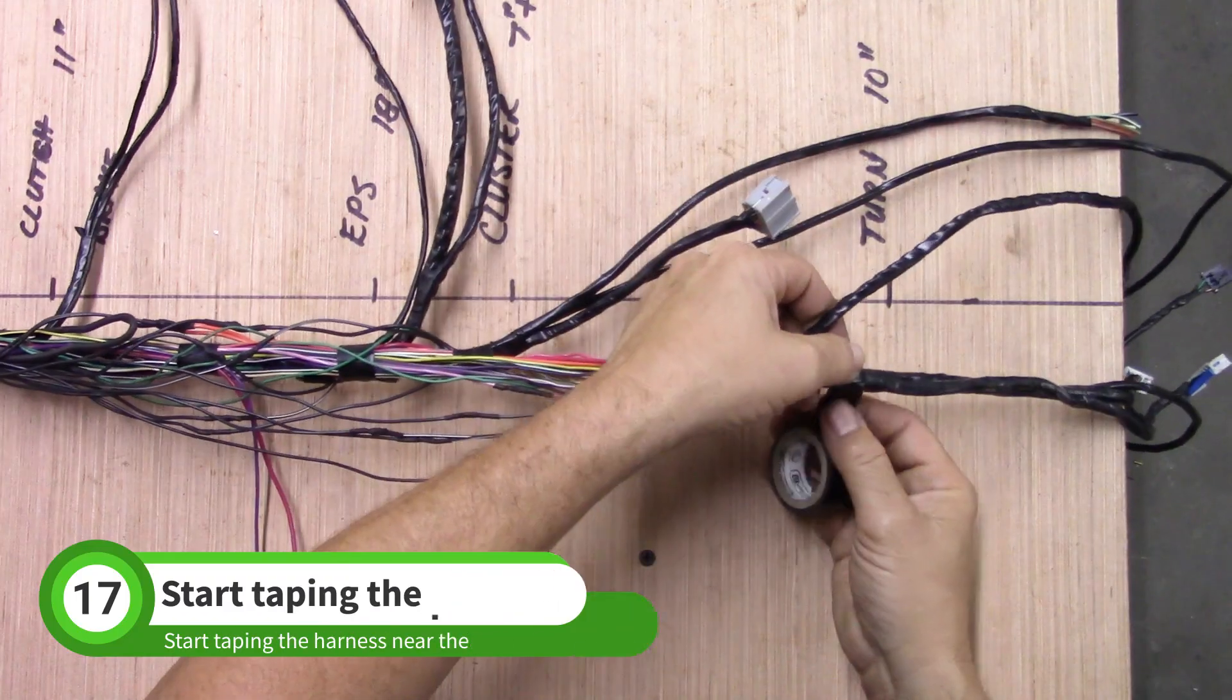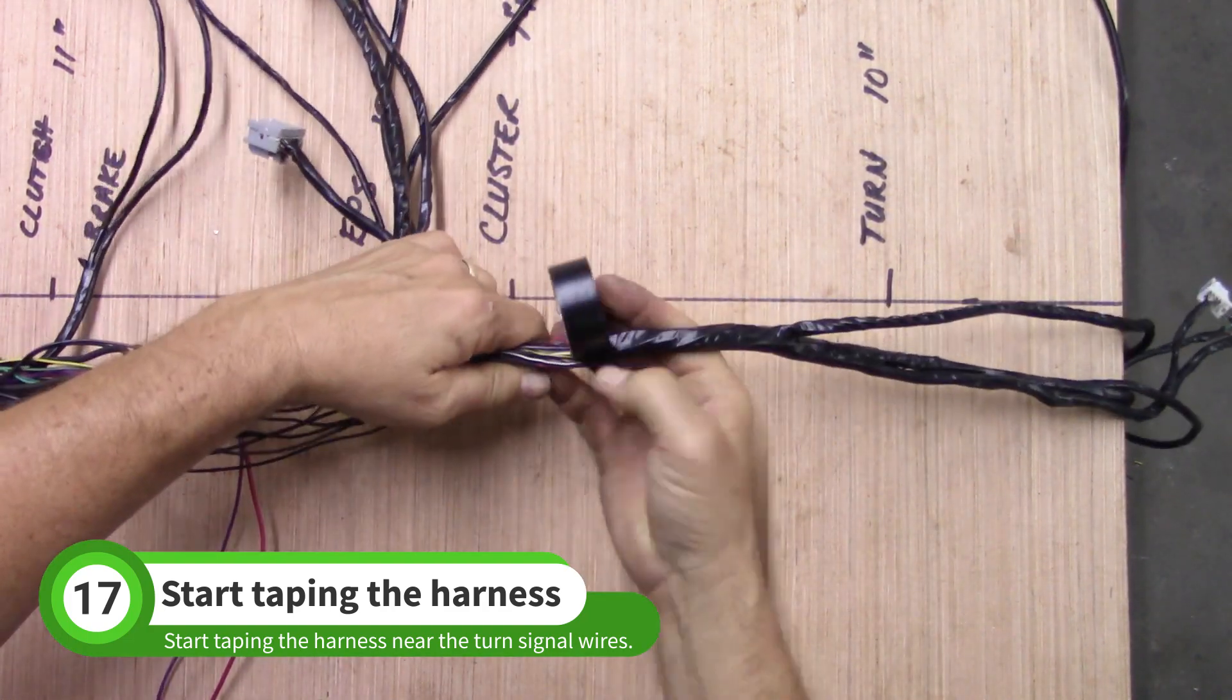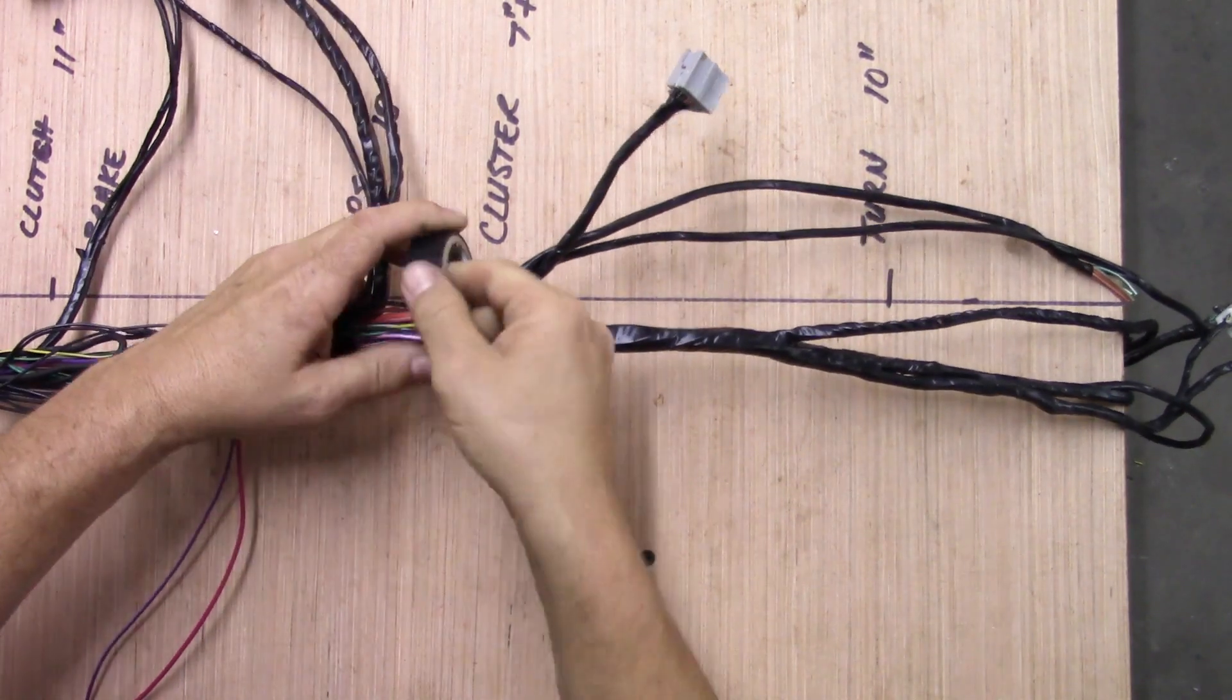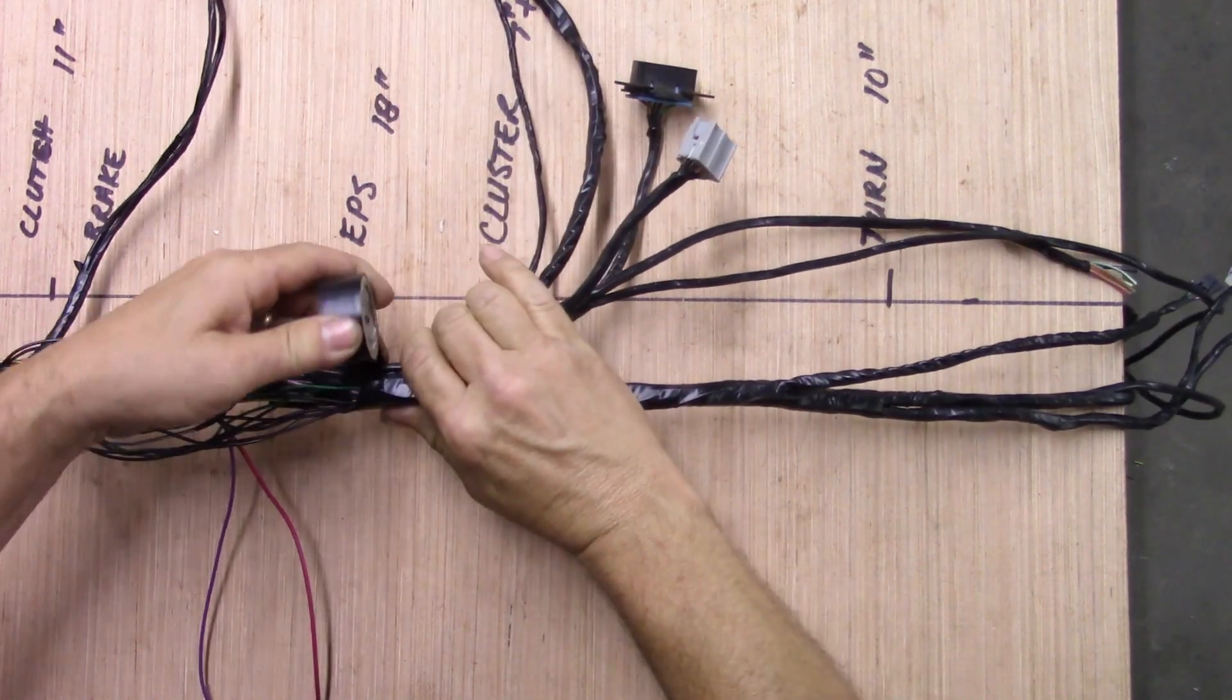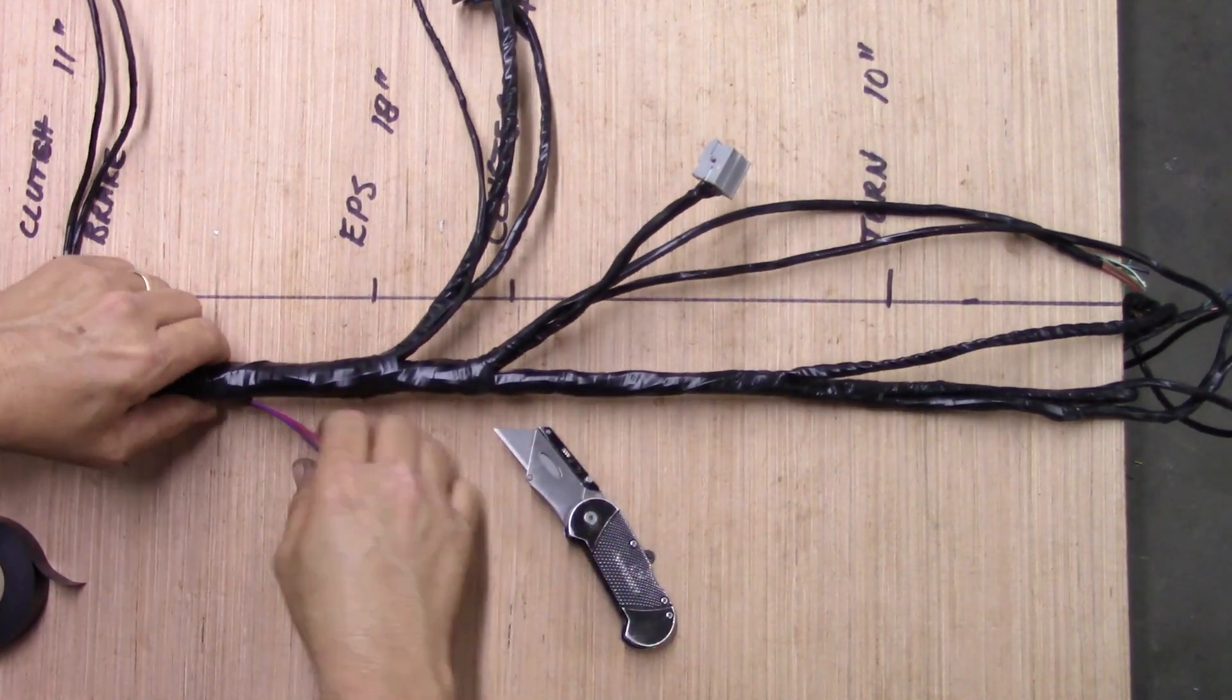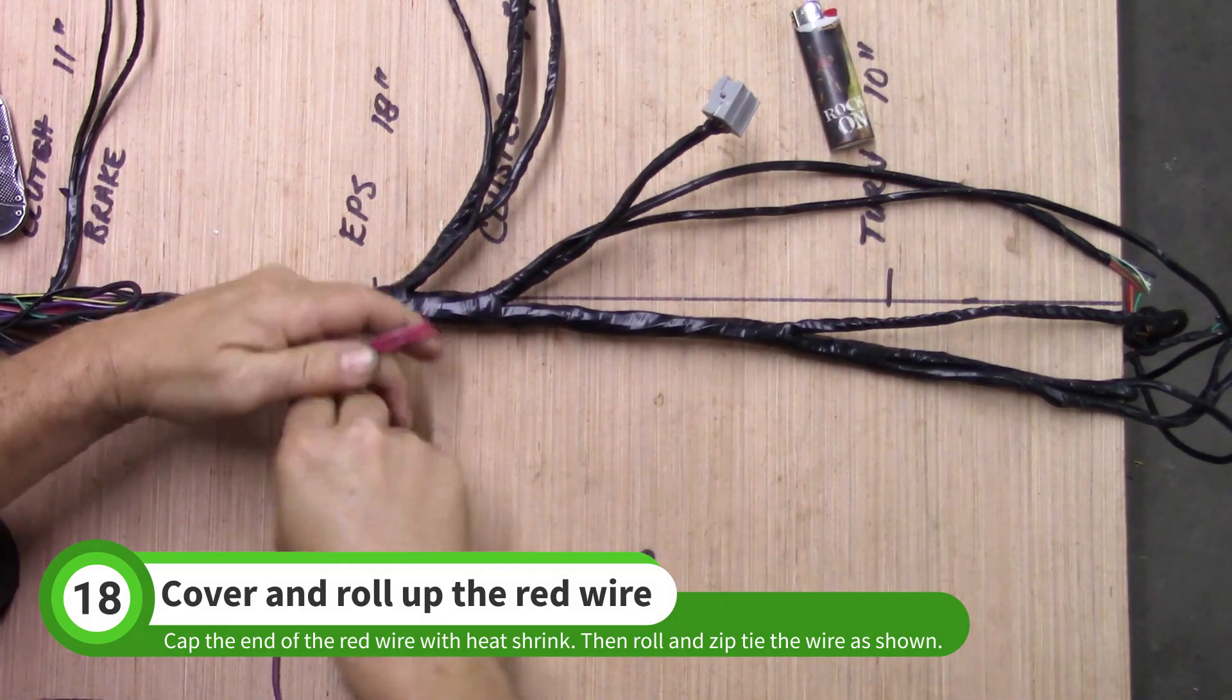Start taping up the harness near the turn signal wires. Stop a few inches past the loose red and purple wires. Fold over the tip of the red wire and add a piece of heat shrink. Roll up the wire and zip tie it to the harness.